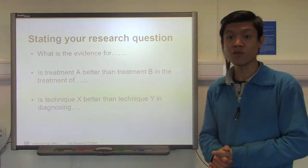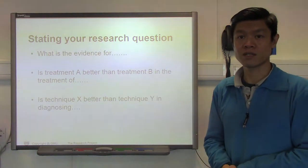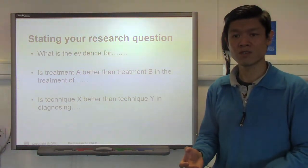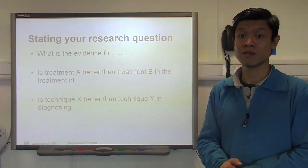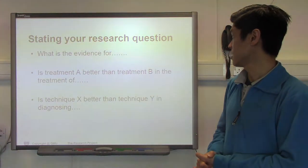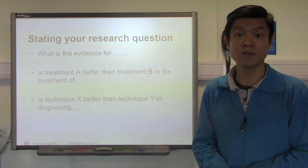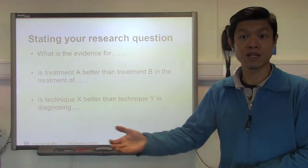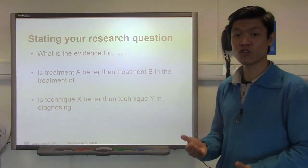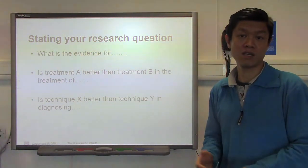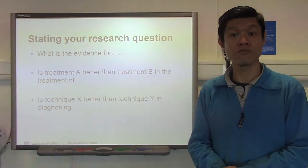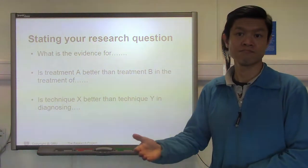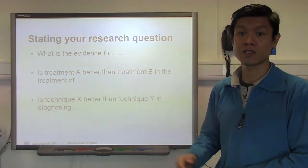How do you state your research question? I've given you some examples here. If you're simply looking at an observation, for example for a particular intervention, service, or approach, then you can ask the question: what is the evidence for a certain approach? If you are comparing treatments with a control or with current standardized treatments, then you can ask: is treatment A better than treatment B in the rehabilitation of a certain condition? Or you can rephrase it as: is technique X better than technique Y in diagnosing a certain clinical condition — so this is looking at diagnostic comparisons.